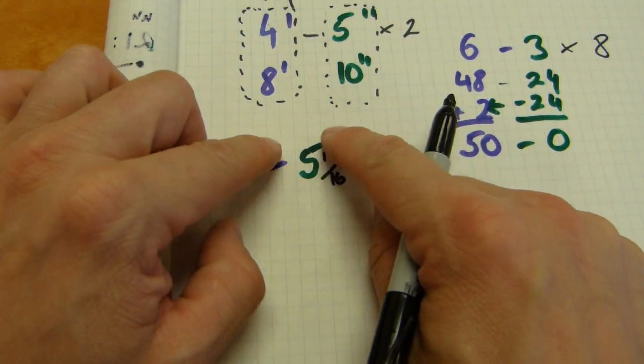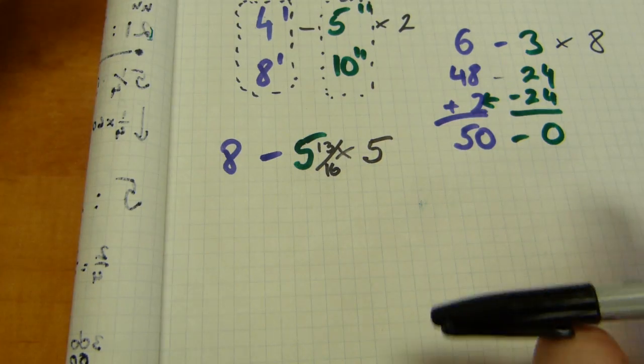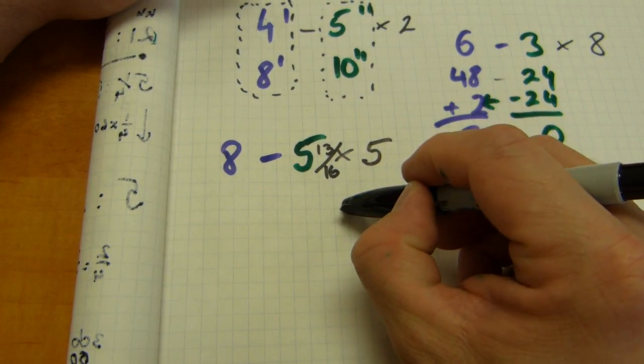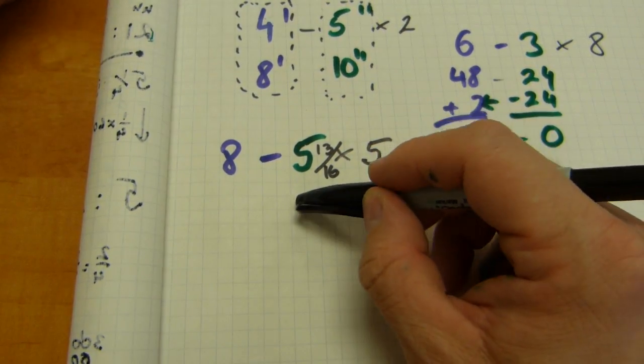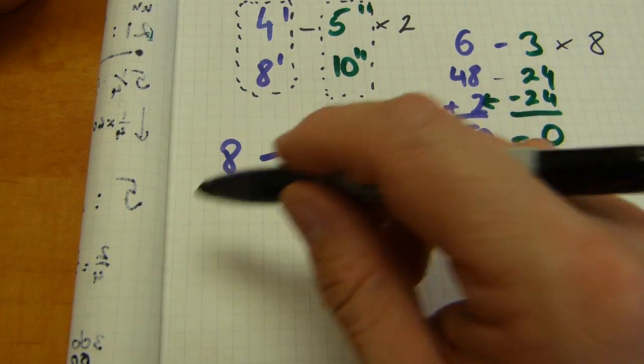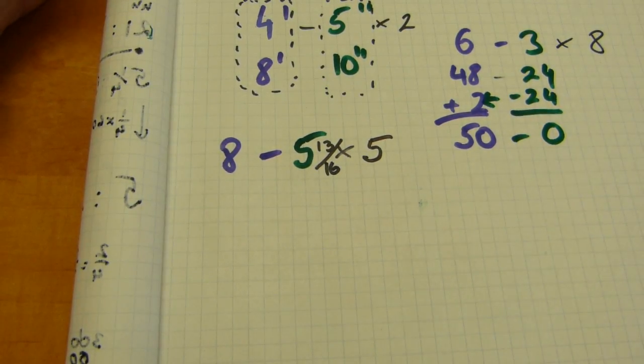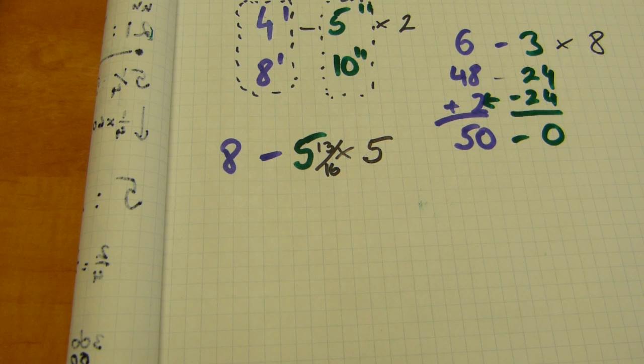And you're gonna have to carry over from the fractions to the inches and from the inches to the feet. From the smallest guy to the one bigger guy and from those one more bigger. Much like making carrying change over and changing money up into bigger denominations.